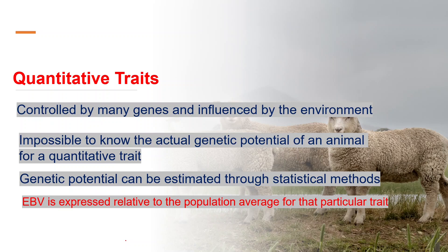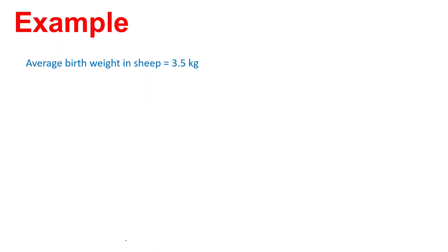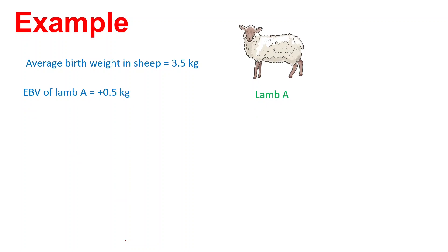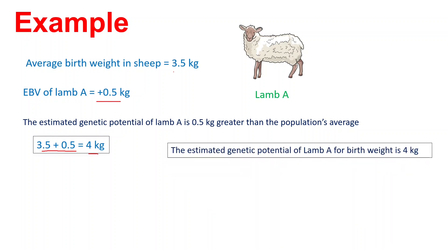EBV is expressed relative to the population average for that particular trait. That's why you always see a positive or negative symbol with the EBV. For example, the average birth weight in sheep is 3.5 kg and the estimated breeding value of lamb A for birth weight is positive 0.5. It means the estimated genetic potential of lamb A is 0.5 kg greater than the population average. As the population average was 3.5 and the EBV of lamb A was positive 0.5, so 3.5 plus 0.5 equals 4 kg. Hence, the estimated genetic potential of lamb A for birth weight is 4 kg.